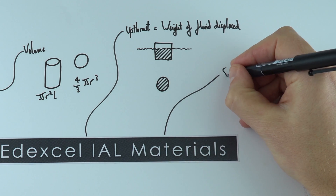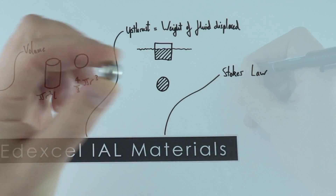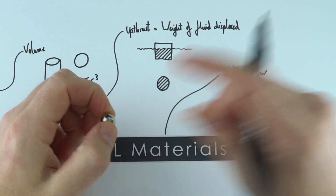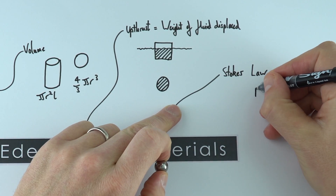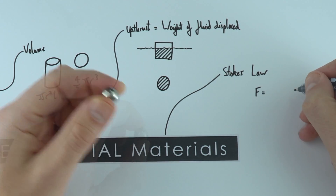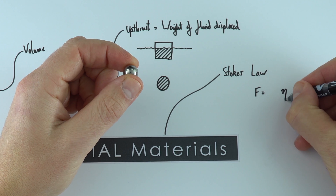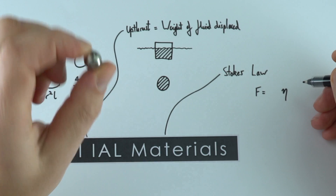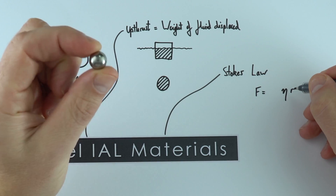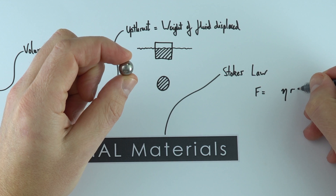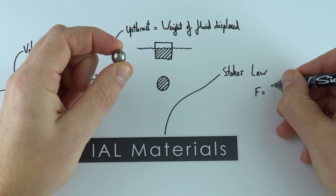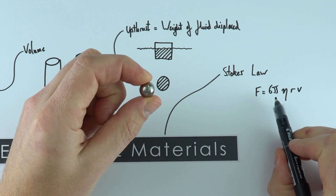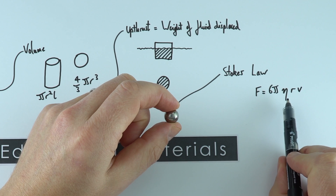This is where we come on to Stokes' law. Perhaps we had a ball bearing falling through some liquid — what's going to be affecting the drag force on that? The drag force depends upon the viscosity of that liquid, which we use the Greek letter eta for, how big the ball bearing is (radius R), and how quickly it's moving (velocity v). In actual fact there's also a 6π in there, and this is a relationship found through experimentation.